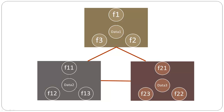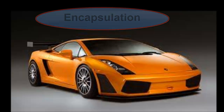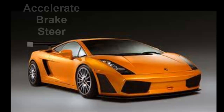Let's discuss the object-oriented concepts: encapsulation, polymorphism, and inheritance. The first one is encapsulation. It hides the internal state of one object from others — it conceals the details.